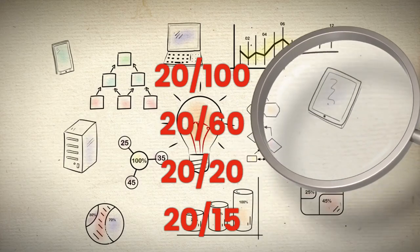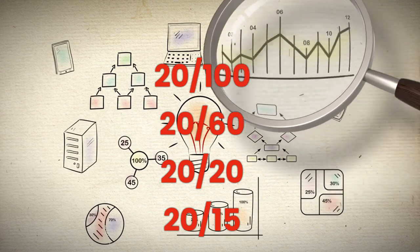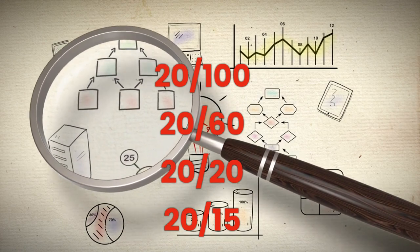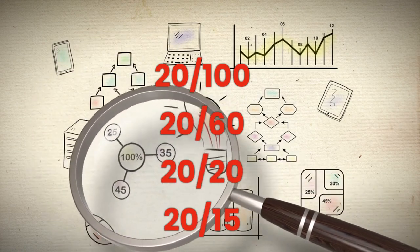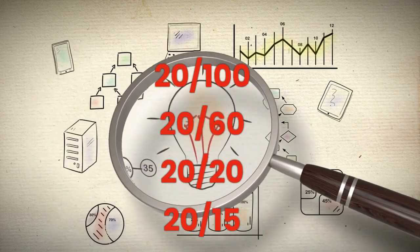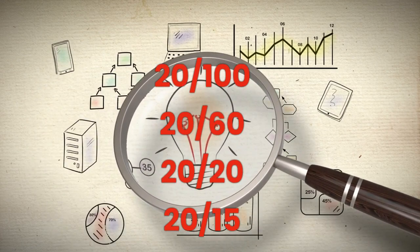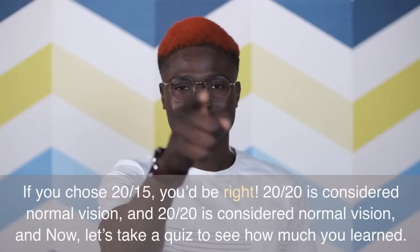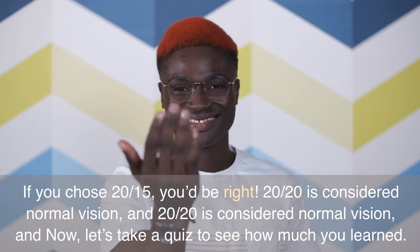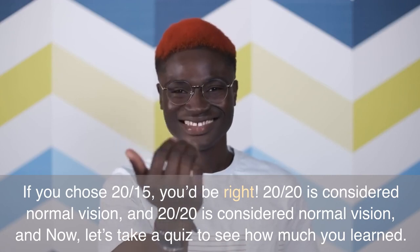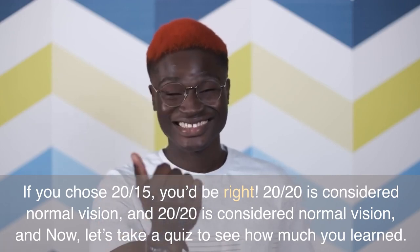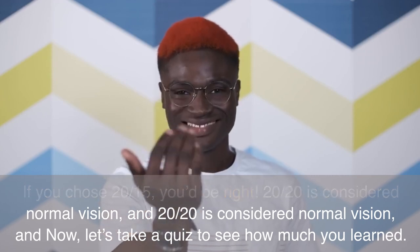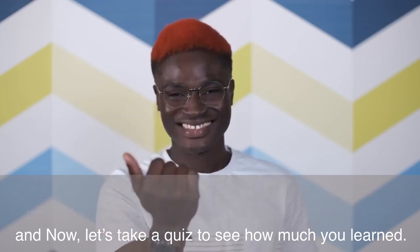Let's take a step back and review some important information. Which of the following represents the best visual acuity: 20/100, 20/60, 20/20, or 20/15? If you chose 20/15, you'd be right. 20/20 is considered normal vision, and now let's take a quiz to see how much you learned.